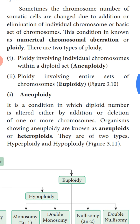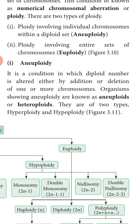Aneuploidy is a condition in which the diploid number is altered either by addition or deletion of one or more chromosomes. You can mark the definition: the diploid number, represented by 2n, is altered by addition or deletion — so 2n minus 1, or 2n plus or minus 2. Organisms showing aneuploidy are called aneuploids or heteroploids.